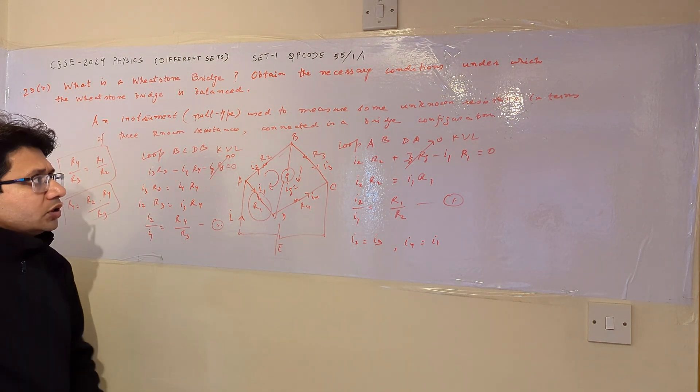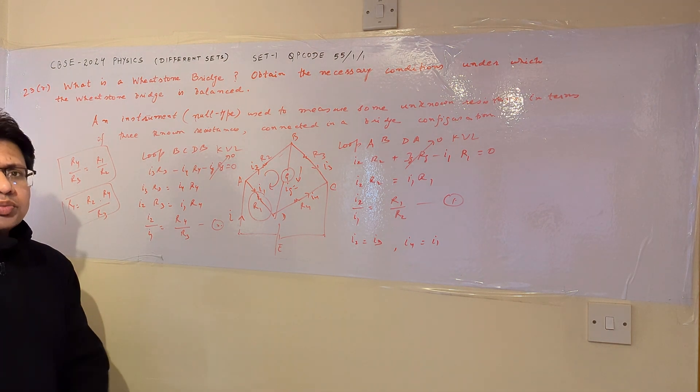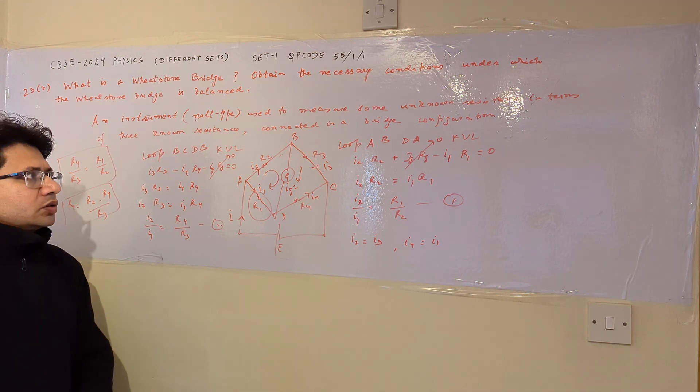And this is the derivation. So hope you understand the derivation for the Wheatstone bridge to be in the balanced state. Thank you.